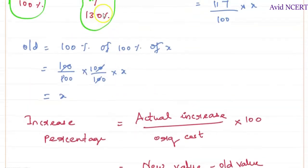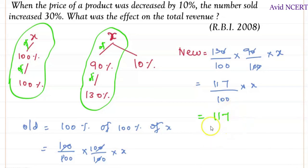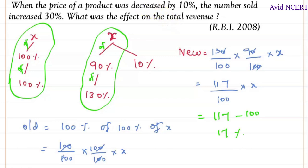So 17 percent is the effect on total revenue — a 17 percent increase. This can also be found in the first step: the new revenue is 117, which is above 100, so subtracting 100 gives 17 percent increase. That is the effect on total revenue. Thanks for watching — if you have any doubts, please let me know in the comments.